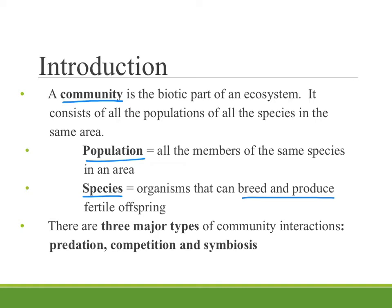There are three major types of community interactions that occur between the different populations in a community: predation, competition, and symbiosis. Today we're just going to talk about predation and competition. Another video will cover symbiosis.